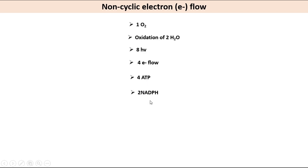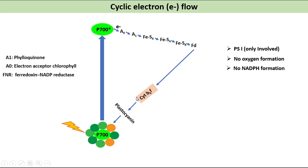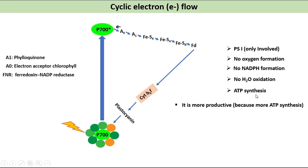In cyclic electron flow, only photosystem I participates. Electrons move from ferredoxin back to the cytochrome B6F complex instead of reducing NADP. There is no oxygen evolution, no NADPH formation, and no oxidation of water. Cyclic electron flow is more productive in terms of ATP synthesis. The condition favoring cyclic electron flow is when NADPH levels are high and ATP levels are low.